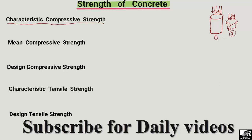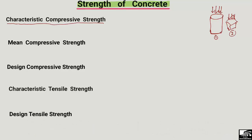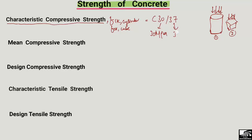So we have two types: one is the cylinder and one is the cube. The strength values are called fck — characteristic compressive strength — where fck refers to the cylinder and fck,cube refers to the cube. For example, if we have characteristic compressive strength of concrete class C30/37, it means the characteristic cylinder strength is 30 MPa and the characteristic cube strength is 37 MPa. There are standard dimensions for the cylinder and cube.